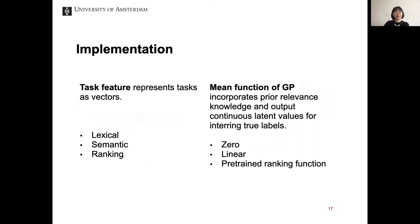CrowdGP allows us to denote tasks as vectors. In this work, we use three types of features: lexical, semantic, and ranking. Another key advantage of CrowdGP is its mean function, which allows us to incorporate prior relevance knowledge and output continuous latent values for inferring true labels. We test three types of mean functions: zero function, linear function, and a pre-trained ranking function.